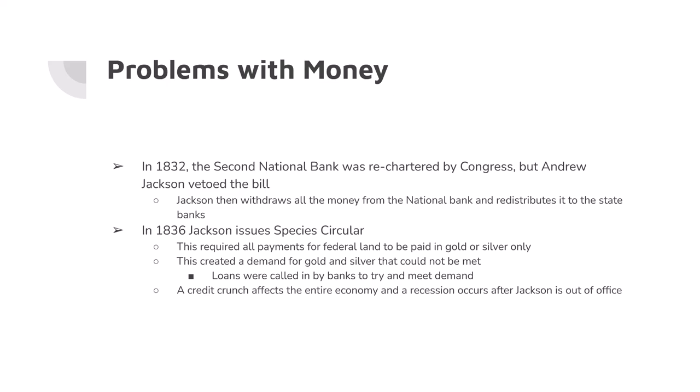There's also the Specie Circular issue. In 1836, Jackson was worried about speculation on public lands — people would buy land super cheap and resell it at a huge profit. So Jackson issues the Specie Circular, which said only gold or silver would be acceptable payment for federal lands. Nobody had gold and silver, so land purchases plummeted. People demanded gold and silver coins, meaning state banks needed to call in loans. People couldn't pay their loans, causing a credit crunch that killed the entire economy and led to a recession once Andrew Jackson was out of power.